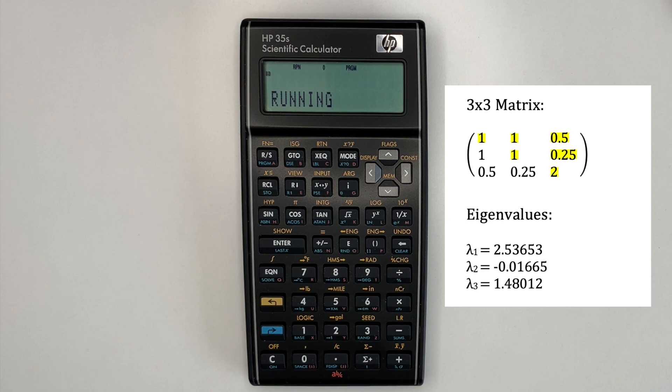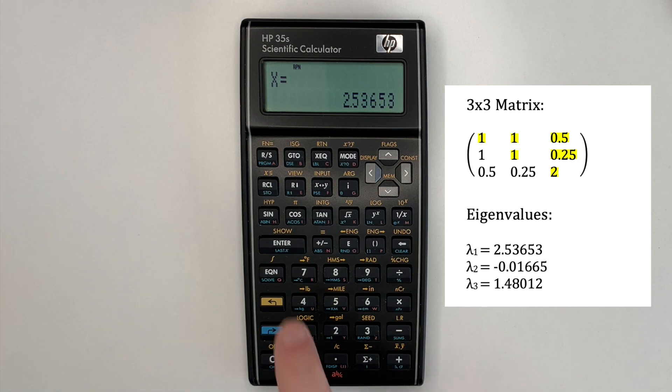After approximately 20 seconds, the eigenvalues are returned one at a time. So we can see the first value there, 2.53653, which is correct.